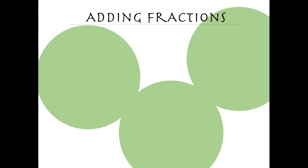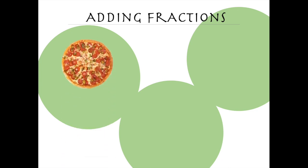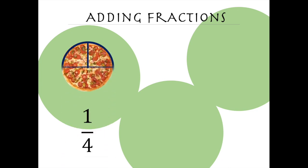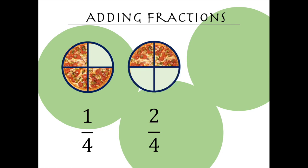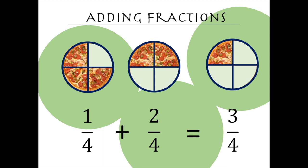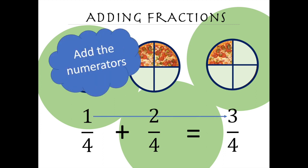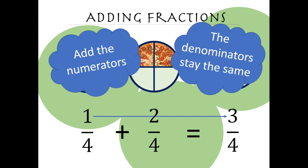Some fractions are really easy to add. For example, you and your buddy order a pizza. You eat one-fourth of it, and he eats two-fourths of it. How much have you both eaten together? If we add one-fourth and two-fourths, we get three-fourths. All we really did was add the top, the numerators, and the bottom, the denominators, stay the same. The problem is that fractions aren't always that simple, are they?